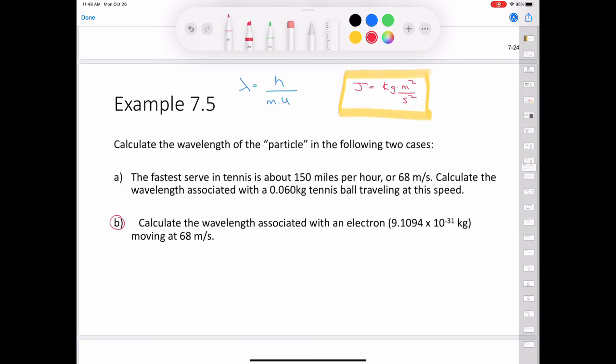In part B, we're asked to calculate the wavelength associated with an electron with a mass of 9.1094 times 10^-31 kilograms moving at the same speed. So we'll plug in our Planck's constant in our numerator, 6.63 times 10^-34 joule seconds, divided by the mass, 9.1094 times 10^-31 kilograms, and then we put in our speed, 68 meters per second. And we end up with a wavelength that is equal to 1.1 times 10^-5 meters.